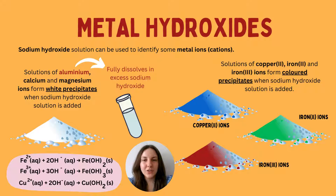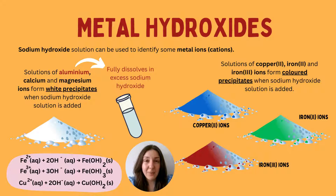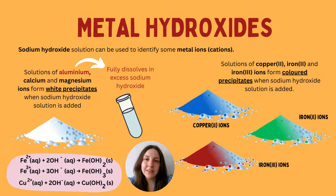Now let's talk about metal hydroxides. Metals always form positively charged ions — cations — because they can donate or lose electrons. Hydroxides contain OH⁻ ions, which are negatively charged, which is why metal hydroxides form as ionic compounds. When you have sodium hydroxide solution, you can use it to identify some metal ions.